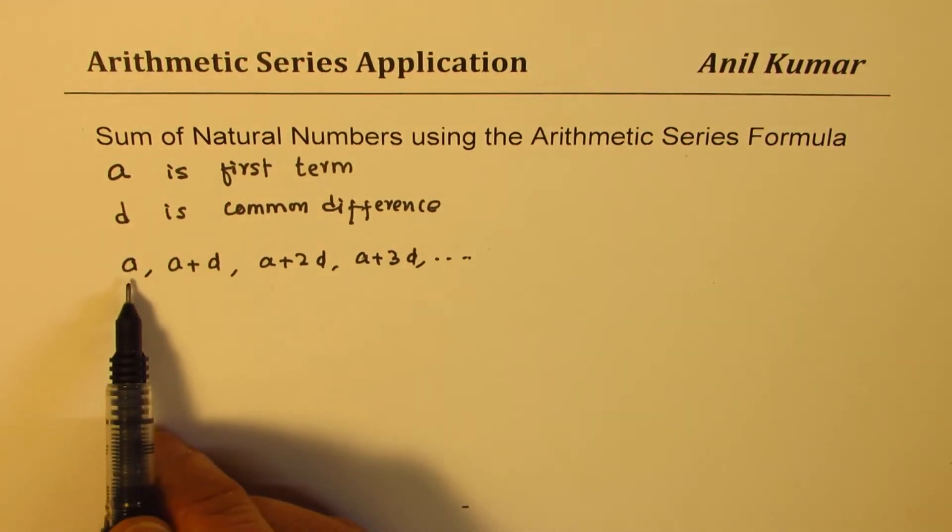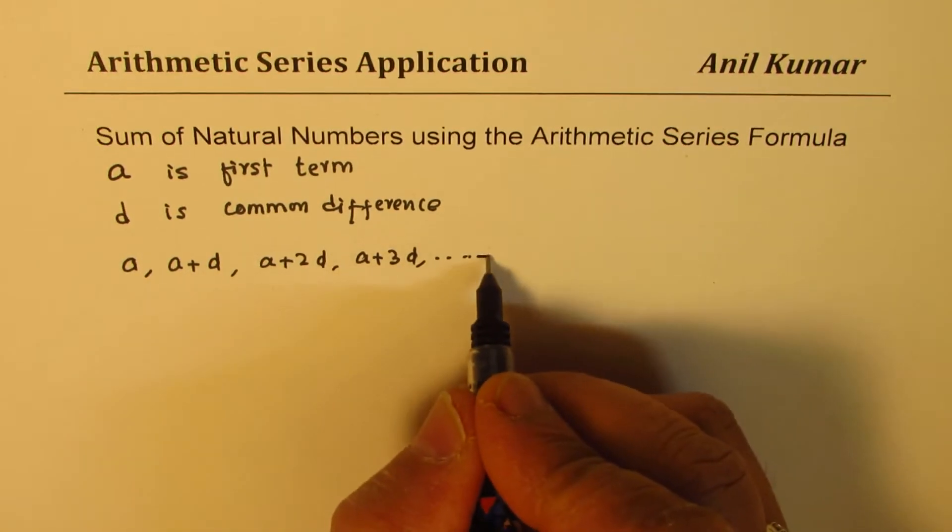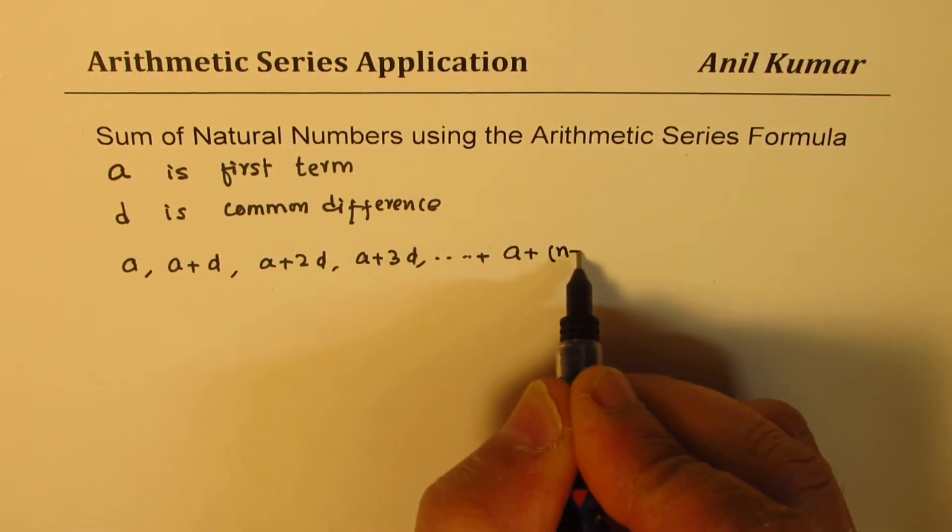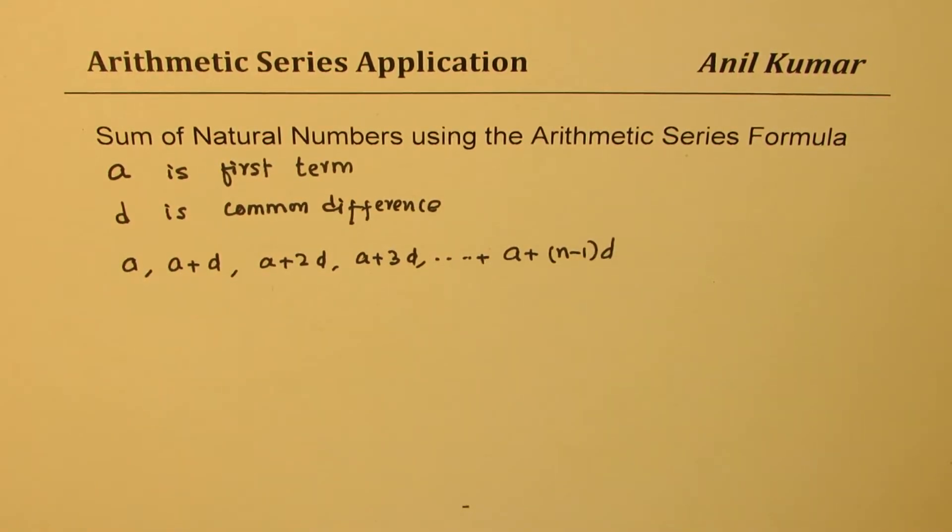This is the first term, second term, third term, fourth term. The nth term will be A plus n minus 1 times D. So that is your nth term.